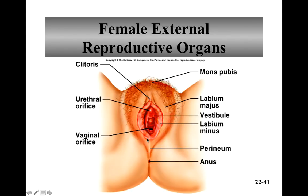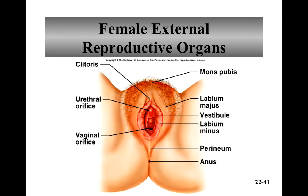Female external reproductive organs: the labia majora is similar to the scrotum — it encloses and protects the other external organs and is a place where you have glands and hair. There's a thickening with more subcutaneous fat over the symphysis pubis called the mons pubis. The labia minora anteriorly forms the clitoral hood. The clitoris is similar to the penis and has two columns of erectile tissue called the corpora cavernosa, with lots of nerve fibers. It's about 2 centimeters by 0.5 centimeters.